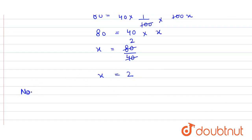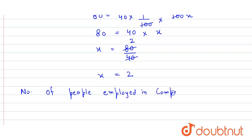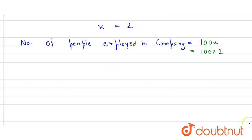So the number of people employed in the company is equal to 100x. Now we simply put the value of x, so it is 100 into 2, which gives us 200. That is our answer.